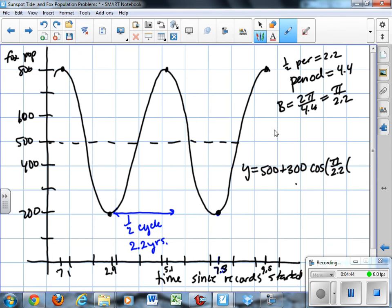Now since I used a positive amplitude here, I would have to start at a high point. So I could say x minus 0.7 or x minus 5.1. Or if I made this negative 300, I could do x minus 2.9. So there's a number of different ways I could write the equation basically by changing the phase displacement.